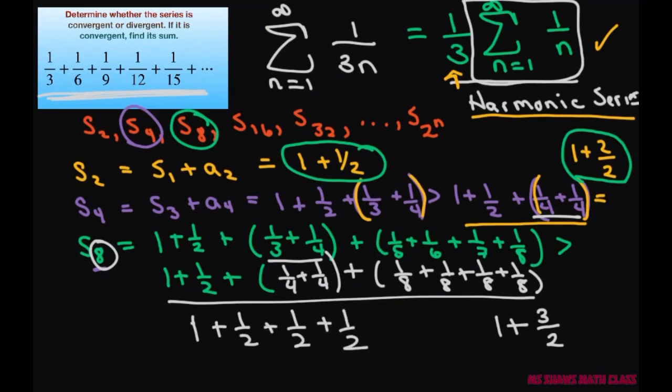Now do you see a pattern? We're going to have 1 + 1/2, then 1 + 2/2, then 1 + 3/2. So when we do S₁₆, that one should be 1 + 4/2. Let's do that.